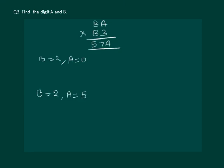Now let us try with B equal to 2 and A equal to 0. We have 20 multiply by 23. If we can get 570 then we get the answer, but on multiplying we are getting 460 which is not equal to 570.